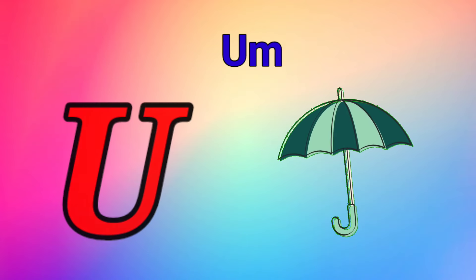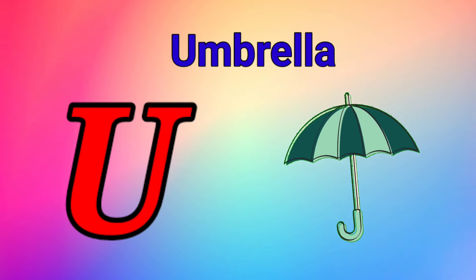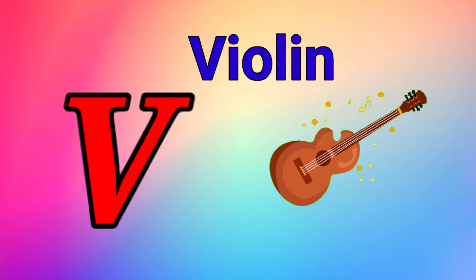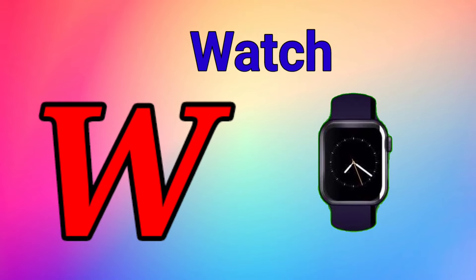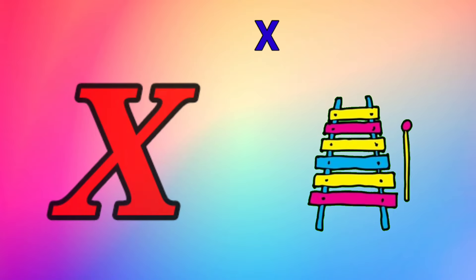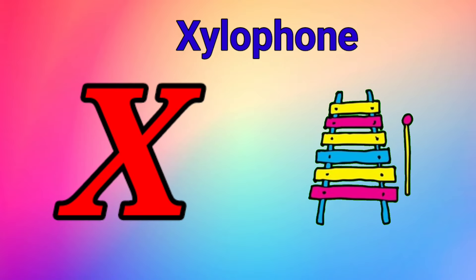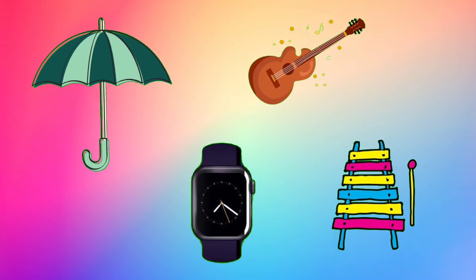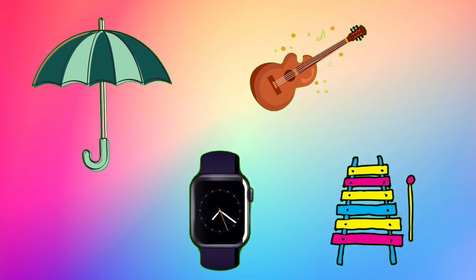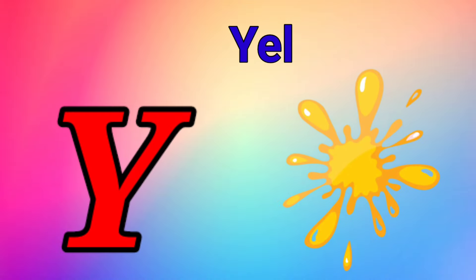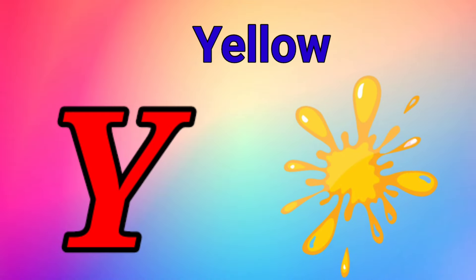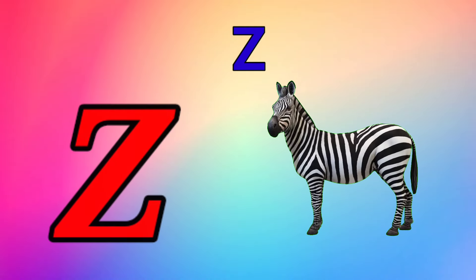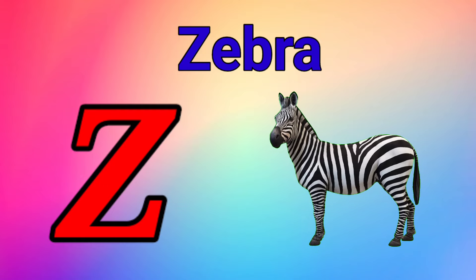U is for umbrella, u-u-umbrella. V is for violin, v-v-violin. W is for watch, w-w-watch. X is for xylophone, z-z-xylophone. Y is for yellow, ye-ye-yellow. Z is for zebra, z-z-zebra.